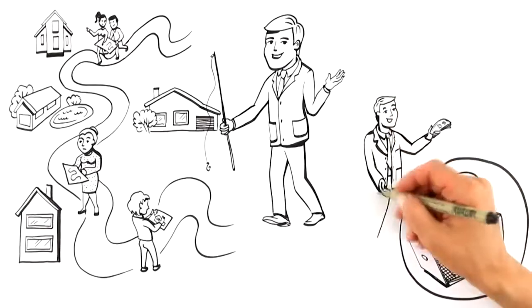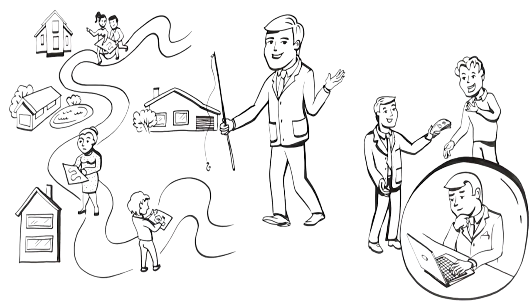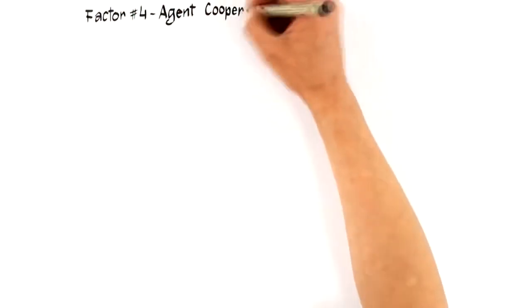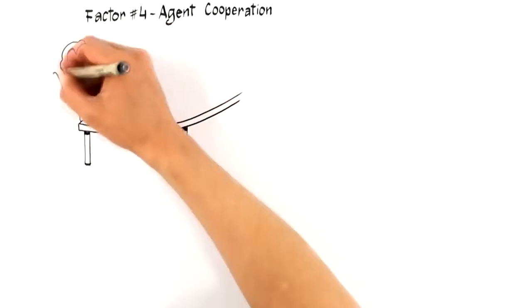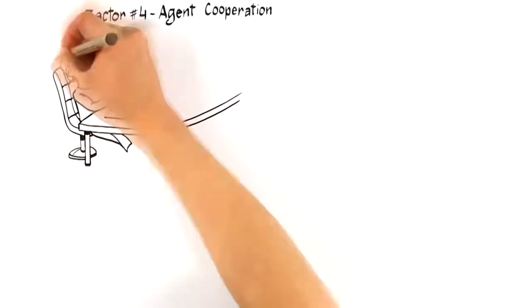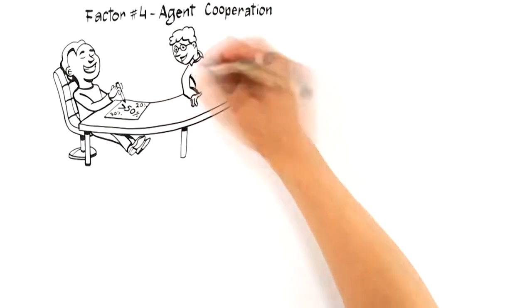Now, a widely known but little-discussed selling factor that significantly increases the likelihood of you getting a top dollar offer is Factor number 4, Agent cooperation. Agent cooperation simply predicts that there is a greater than 50% chance that once your home is exposed to the market, another real estate professional will bring you a buyer.